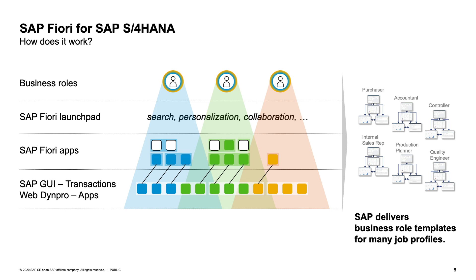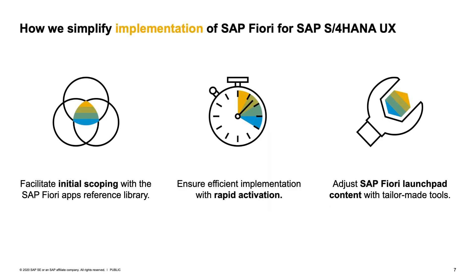That's what we are looking at in this presentation about how to implement Fiori. Basically, we have three main steps to perform. The first one is scoping — for this we offer the Fiori apps reference library, which is a publicly available internet page with information about all Fiori apps and corresponding business roles. The second step is to activate Fiori in a sandbox system using rapid activation. And after your fit gap analysis, you need to adjust the Launchpad content to your specific business roles and processes.